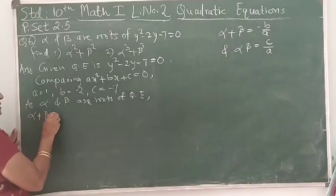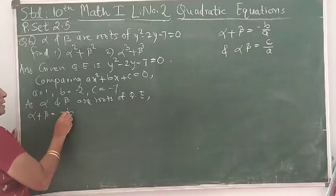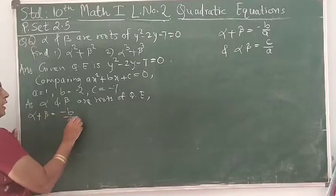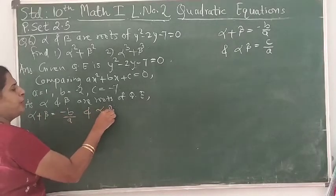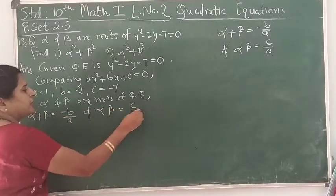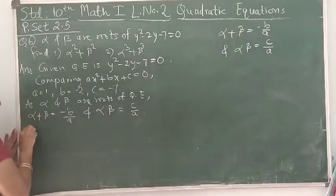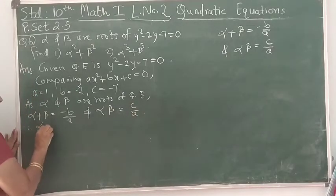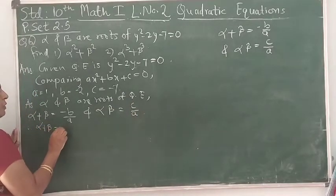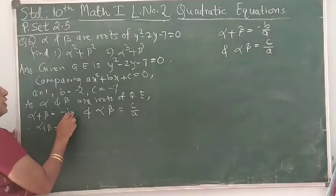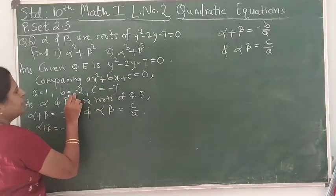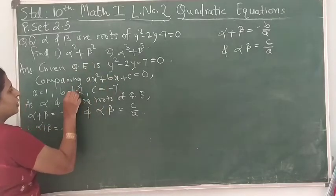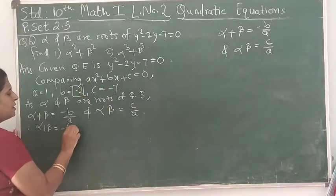Therefore, α + β = -(-2)/1. Since minus times minus becomes plus, α + β = 2.